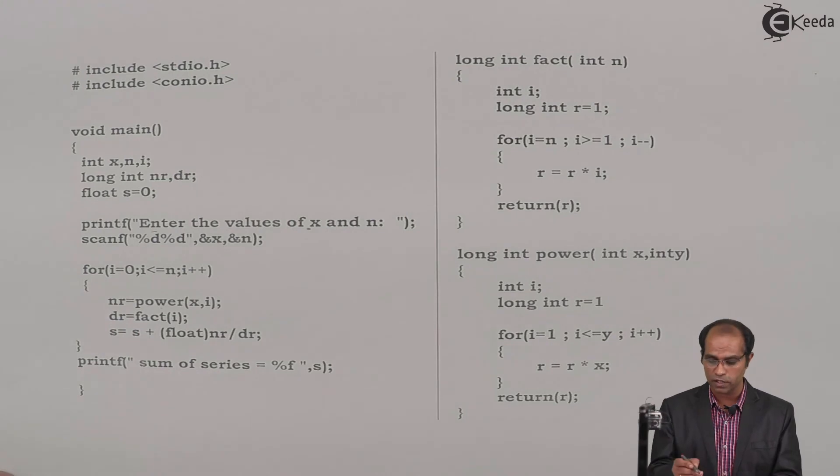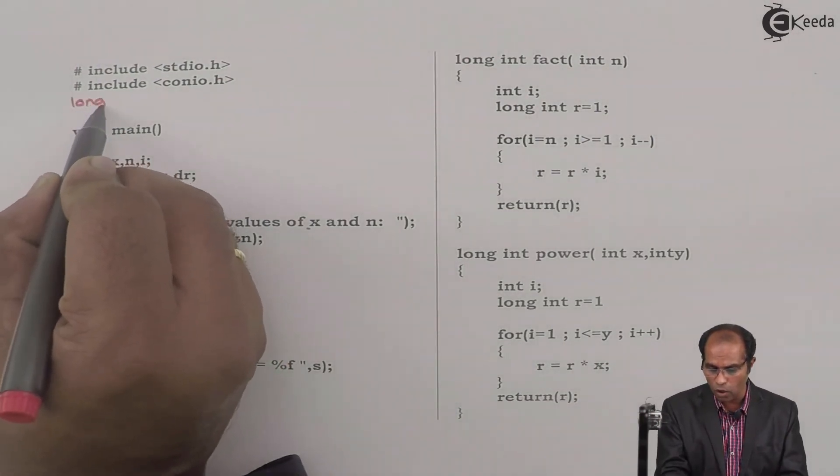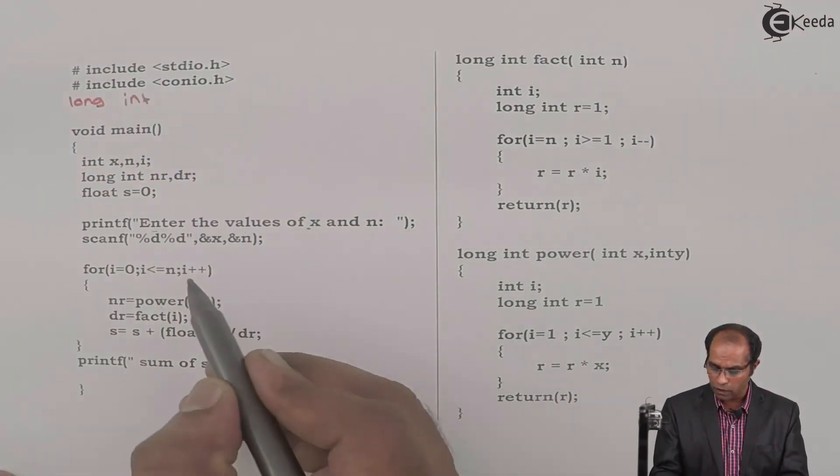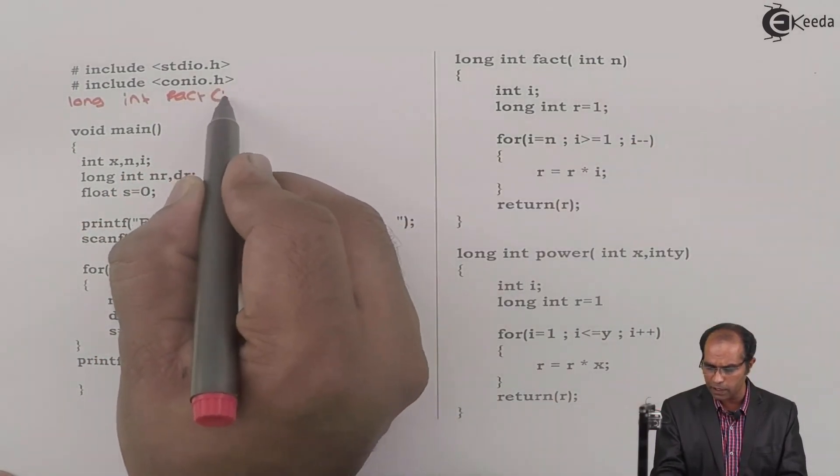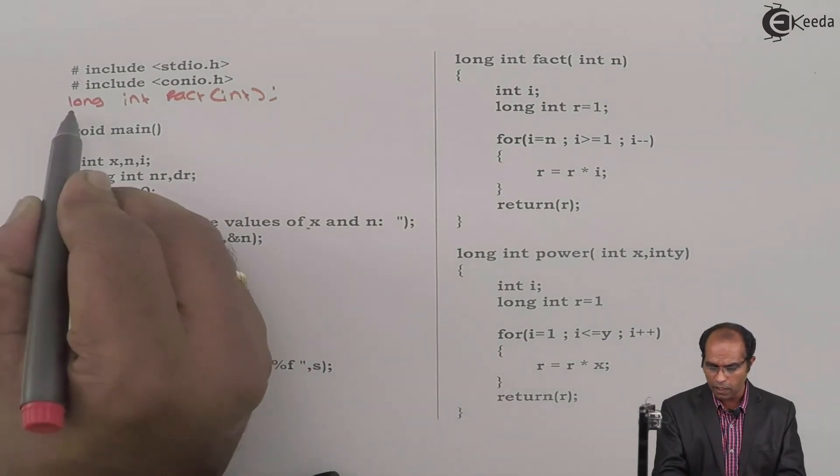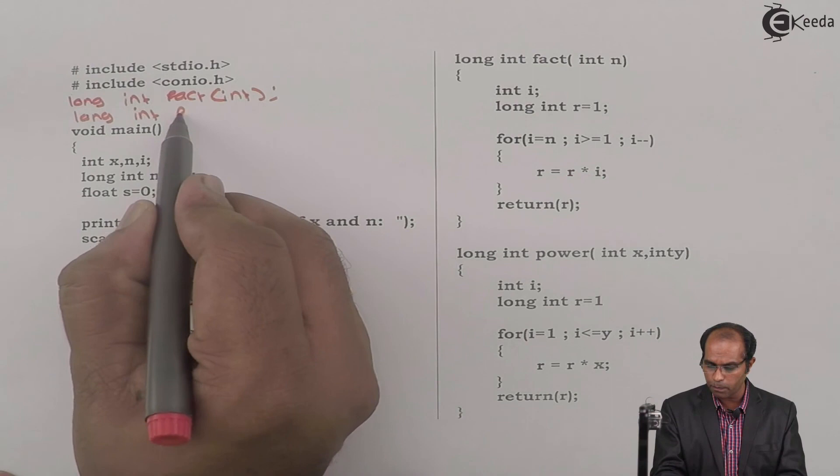Since the program uses two functions, I'm supposed to have the declarations of these two functions. How do I put the declaration of these functions? The first function is long int, the function is fact, it accepts integer value as int and a semicolon.